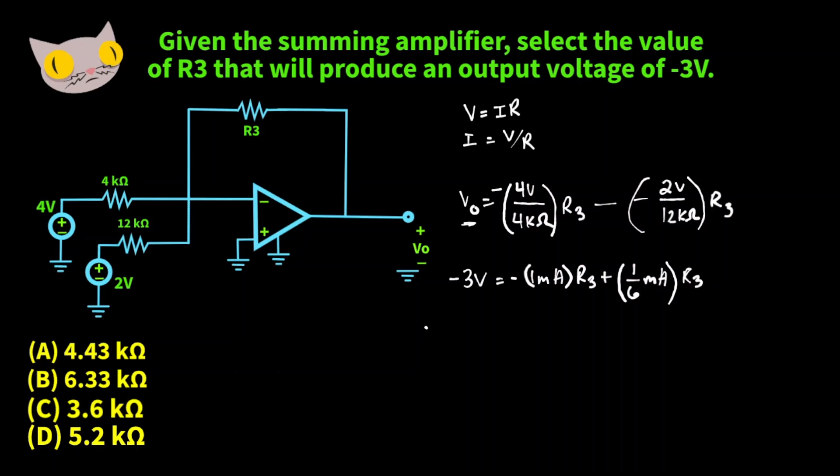Now we can simplify to negative 3 volts is equal to negative 5 over 6 milliamps times R3. Then we're going to multiply both sides by negative 5 sixth milliamps.